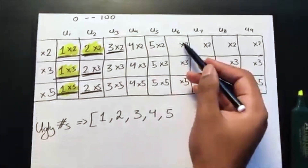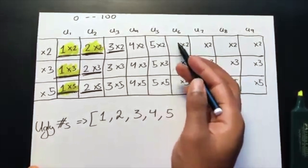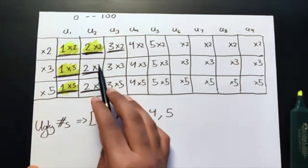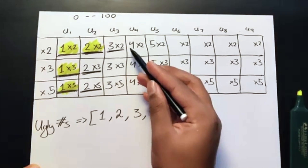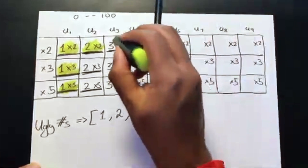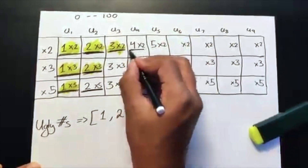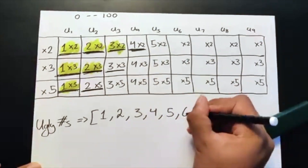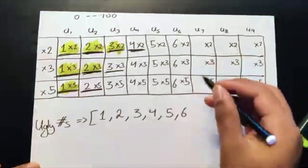For the sixth element, the pointers give us 3 times 2 equals 6, 2 times 3 equals 6, and 2 times 5 equals 10. The smallest is 6, but we have two sixes — from the multiply-by-2 row and the multiply-by-3 row. So we cross both out, advance the pointers for both rows, and add 6 to our ugly numbers once.